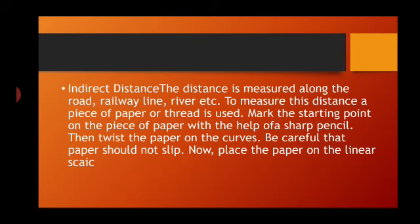The second method is indirect distance. In this method, the distance is measured along the road — the way the road is going, the way the railway line is going, or the way the river is going. It uses natural features and man-made features. To measure it, a piece of paper or a thread is used; mark the starting point with a sharp pencil.